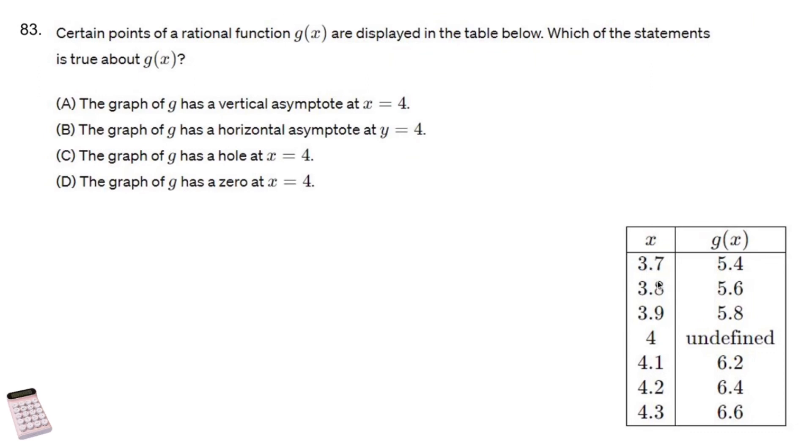We have x values that go up by very small increments, and it looks like this is pretty consistent - they go up by 0.1 every single time. This goes up by 0.2 every single time, except for right there where it's undefined.